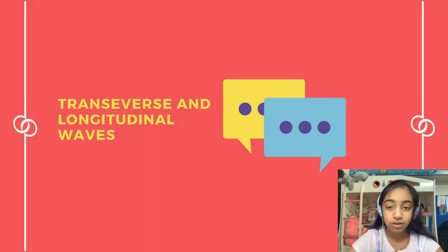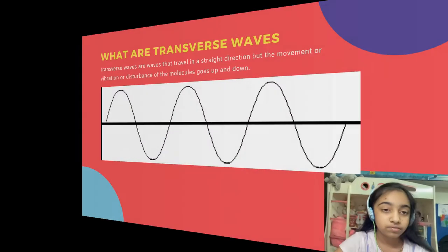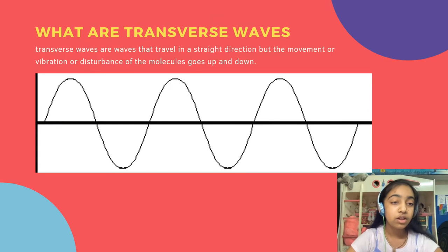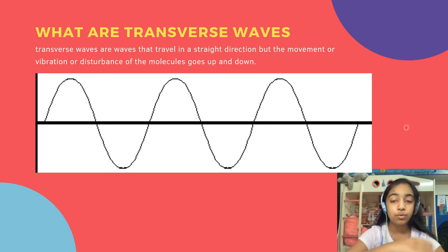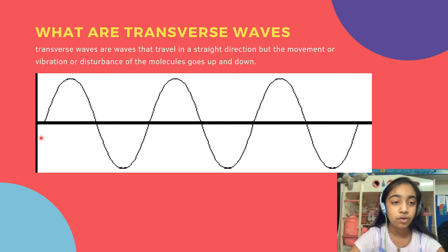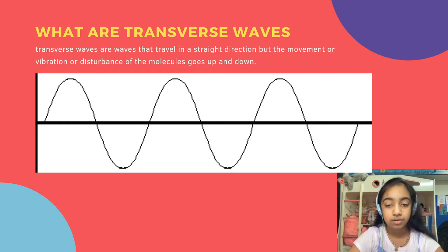Now inside these types there are also two subtypes: transverse and longitudinal waves. Transverse waves are the waves that travel in a straight direction, but the movement or vibration of the molecules goes up and down. So the wave is travelling in one direction, but the particles moving along with the wave are going up and down.